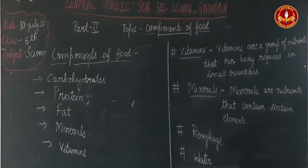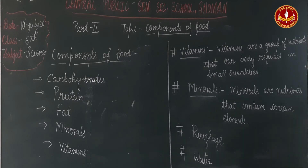Vitamin E is found in vegetable oils, milk, and butter. It provides strength to the muscles and bones, and helps the body fight against toxic substances.